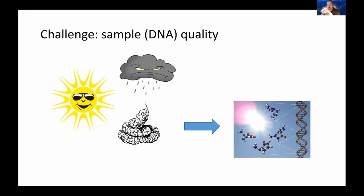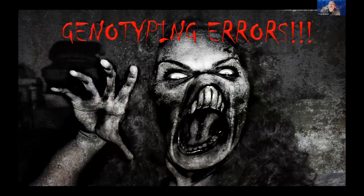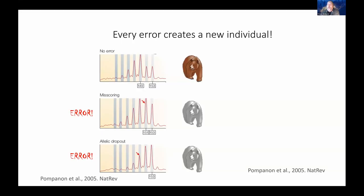We need to take this into account when designing a study. The other critical problem from the laboratory and data analysis perspective are genotyping errors. With bad DNA, genotyping errors cannot be avoided — they must be managed. If the laboratory fails to handle this correctly, it can have severe consequences on study results. Every error generates a new genotype, meaning a new shadow individual, and if we don't handle this correctly we can severely overestimate population size.